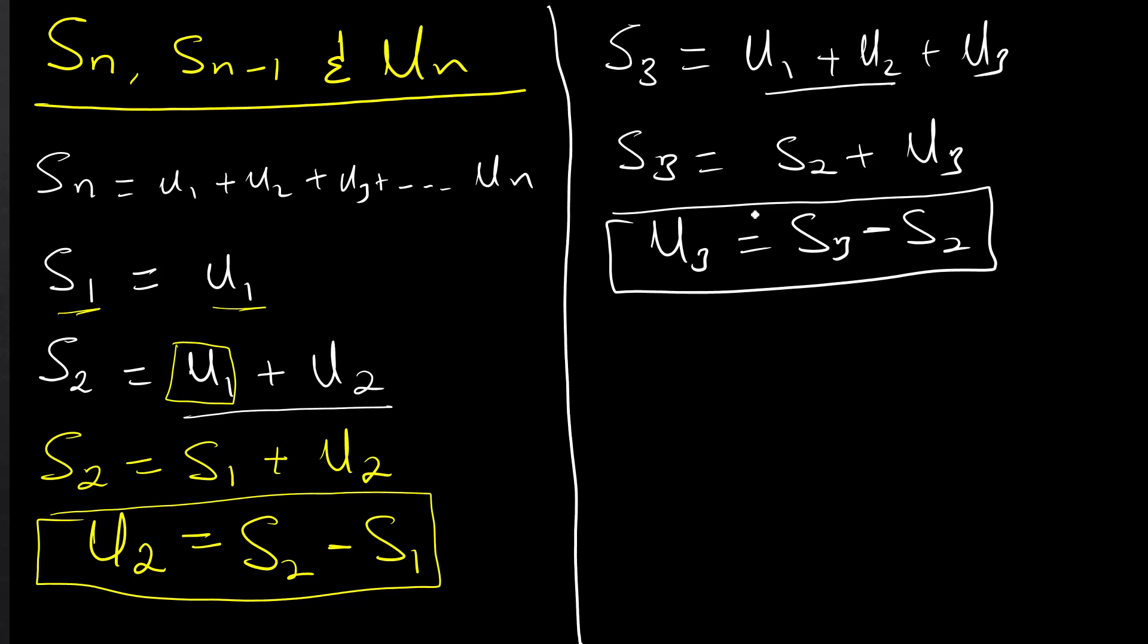All right, let's observe equations 1 and 2. u_2 equals S_2 minus S_1, u_3 equals S_3 minus S_2. So we can write u_7 as S_7 minus S_6. So what is u_n?